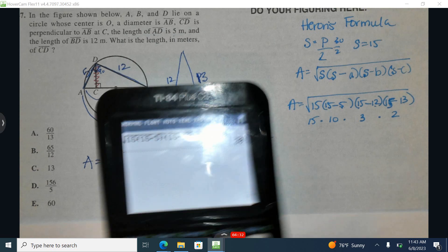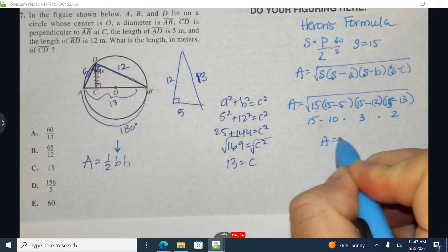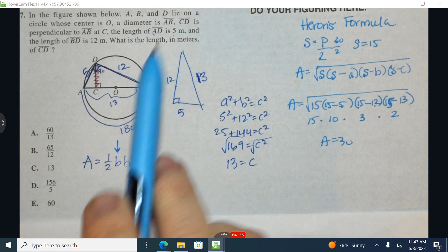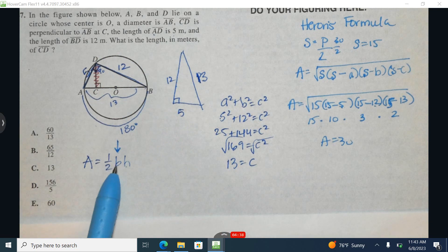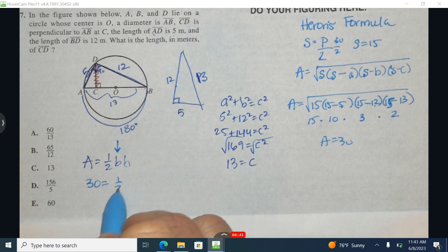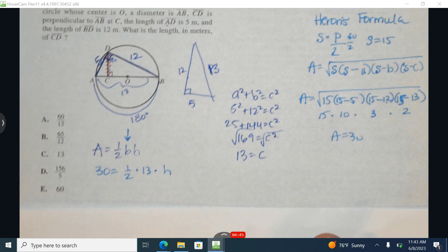The area of this triangle is 30. How is that going to help me? Because I don't want to know the area. I want to know this length. Well, I come over here and I have the area is 30. The base is 13. And I want to know what is the height.